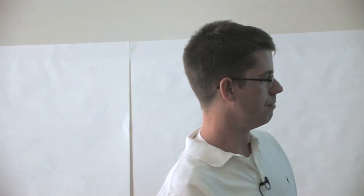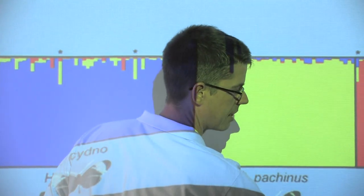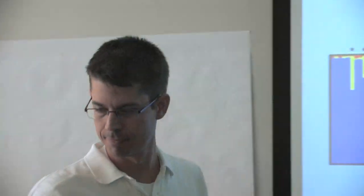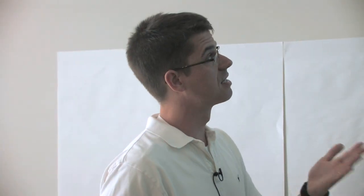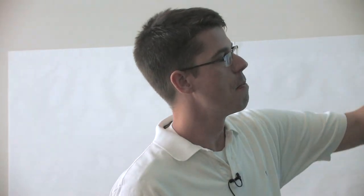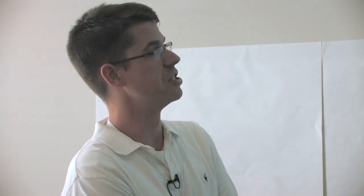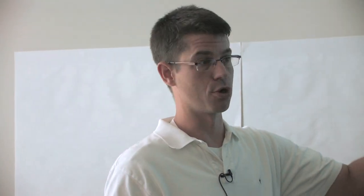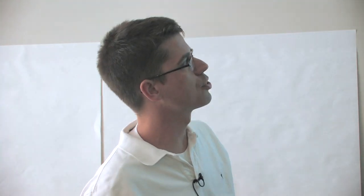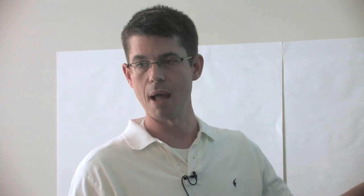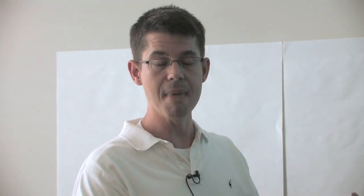So it's pretty clear that species are real things. How do we define them? As science teachers, you may know there is no simple answer — there are at least 25 different definitions of what a species is. The most popular is the biological species concept, popularized by Harvard biologist Ernst Mayr. He defined species as: groups of actually or potentially interbreeding natural populations which are reproductively isolated from other such groups. There are definitely problems with this definition, but it's a working definition that many people studying speciation use.